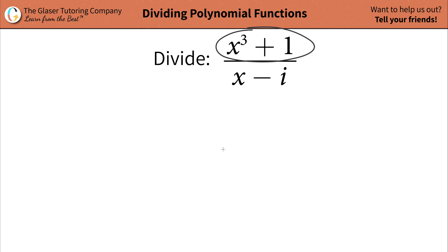Simply take the numerator, write it down, x cubed plus one. That's going to go on the inside of your division symbol. And then on the outside goes your divisor, x minus i.